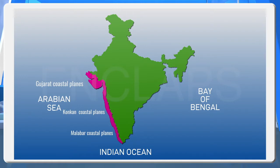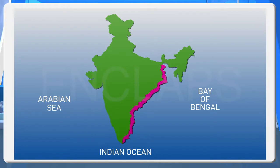Backwaters and estuaries are the features of the Western coastal plain. Depth is generally higher on the Western coast. Therefore, ports are more common on the West coast.